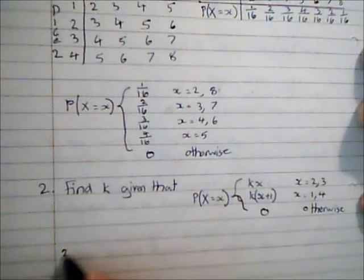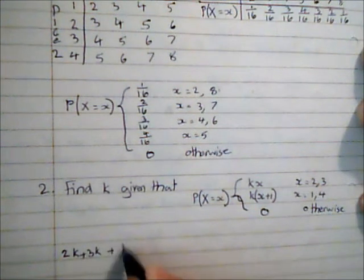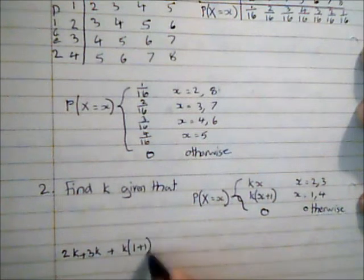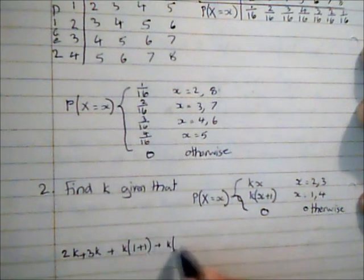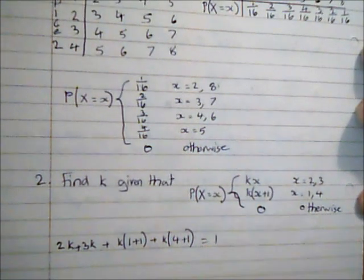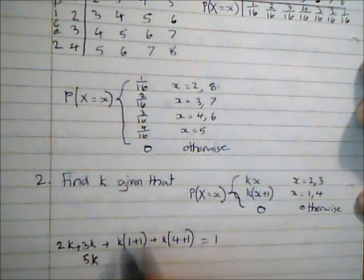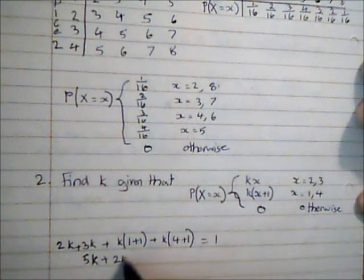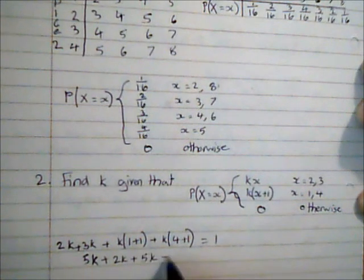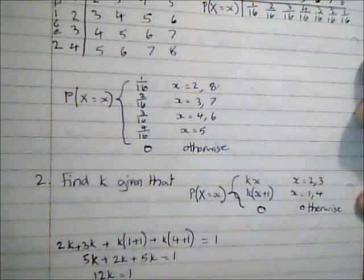So I know 2k plus 3k plus k times (1+1) plus k times (4+1) is equal to 1. And then I'm going to simplify that, so 2k plus 3k is 5k, and then that becomes 2k and this becomes 5k, so then I get 12k equals 1, and therefore k is 1/12.